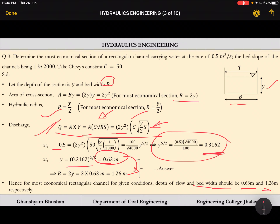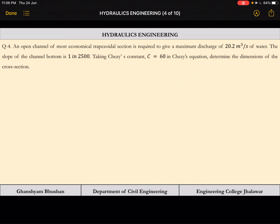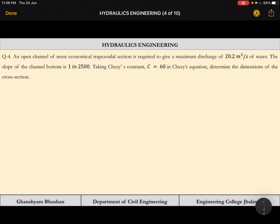Now let us see the next question. An open channel of most economical trapezoidal section is required. The discharge is 20.2 m³/s, the slope of the channel bottom is 1 in 2500, and Chezy's constant C is 60. We need to determine the dimensions of the cross section.